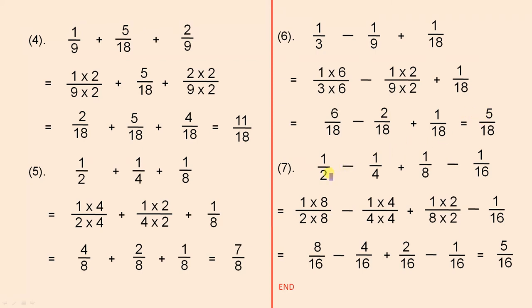And finally we have 2, 4, 8 and 16. Now to get all the denominators equal to 16, we multiply that one by 8, that one by 4 and that one by 2.